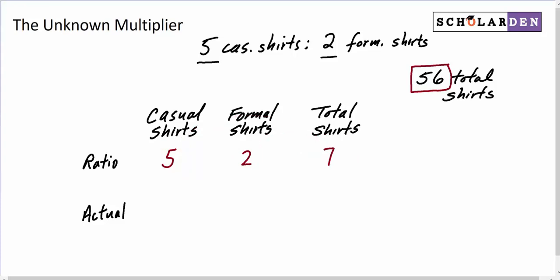Now the actuals, we only know the total, which is 56. And then we try to get the unknown multiplier. We can see it's going to be 8. This is being multiplied by 8. That means everything is multiplied by 8. 2 times 8 is 16. 5 times 8 is 40. So we must have had 40 casual shirts and 16 formal shirts.